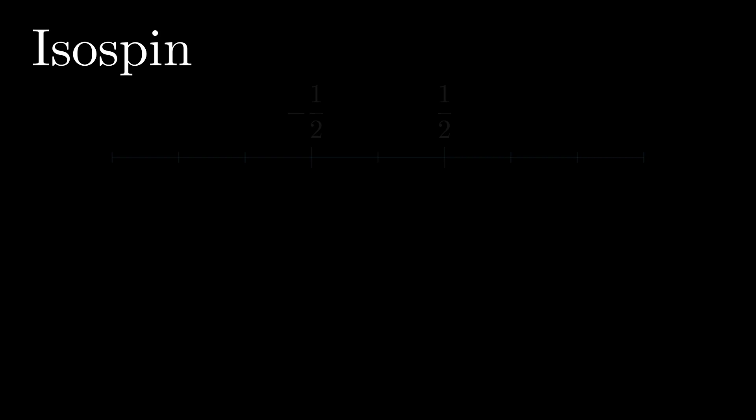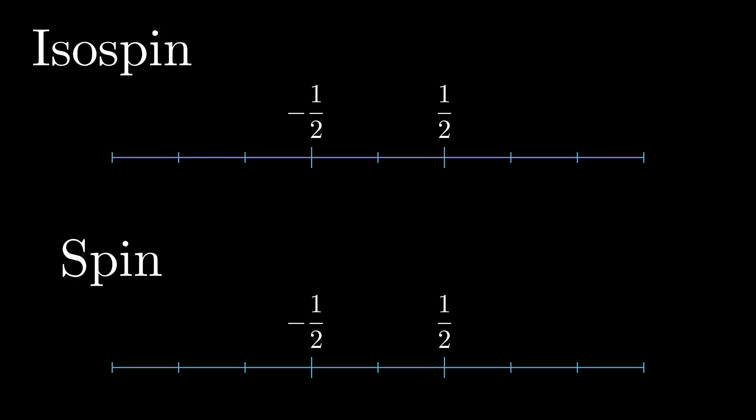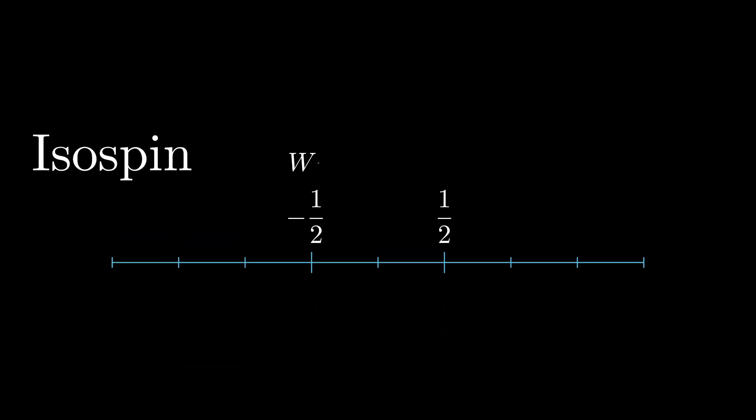But particles also have a property known as isospin, which have two possible values, one-half and minus one-half, which makes it mathematically similar to spin. And in fact, that's why they have similar names.